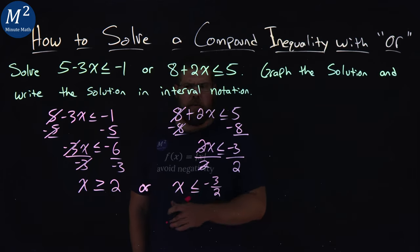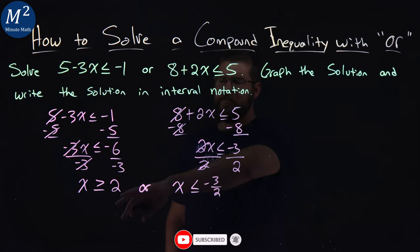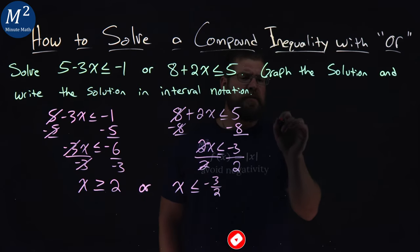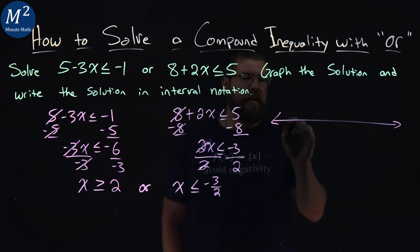So let's go graph this. We want to graph the OR here. So we have a range from negative 3 halves to 2 in our number line here, so let's go make this. Let's start at negative 3.